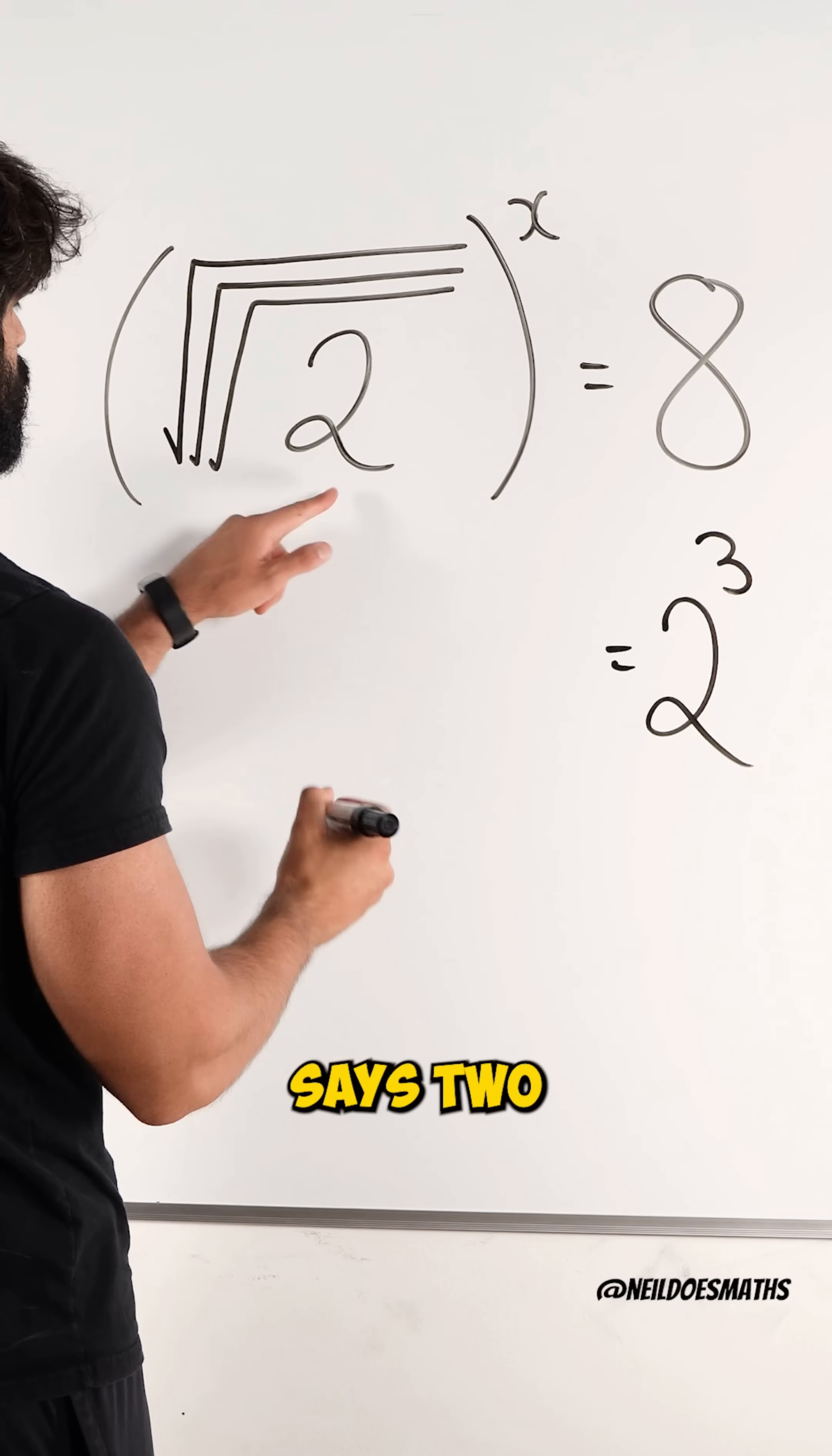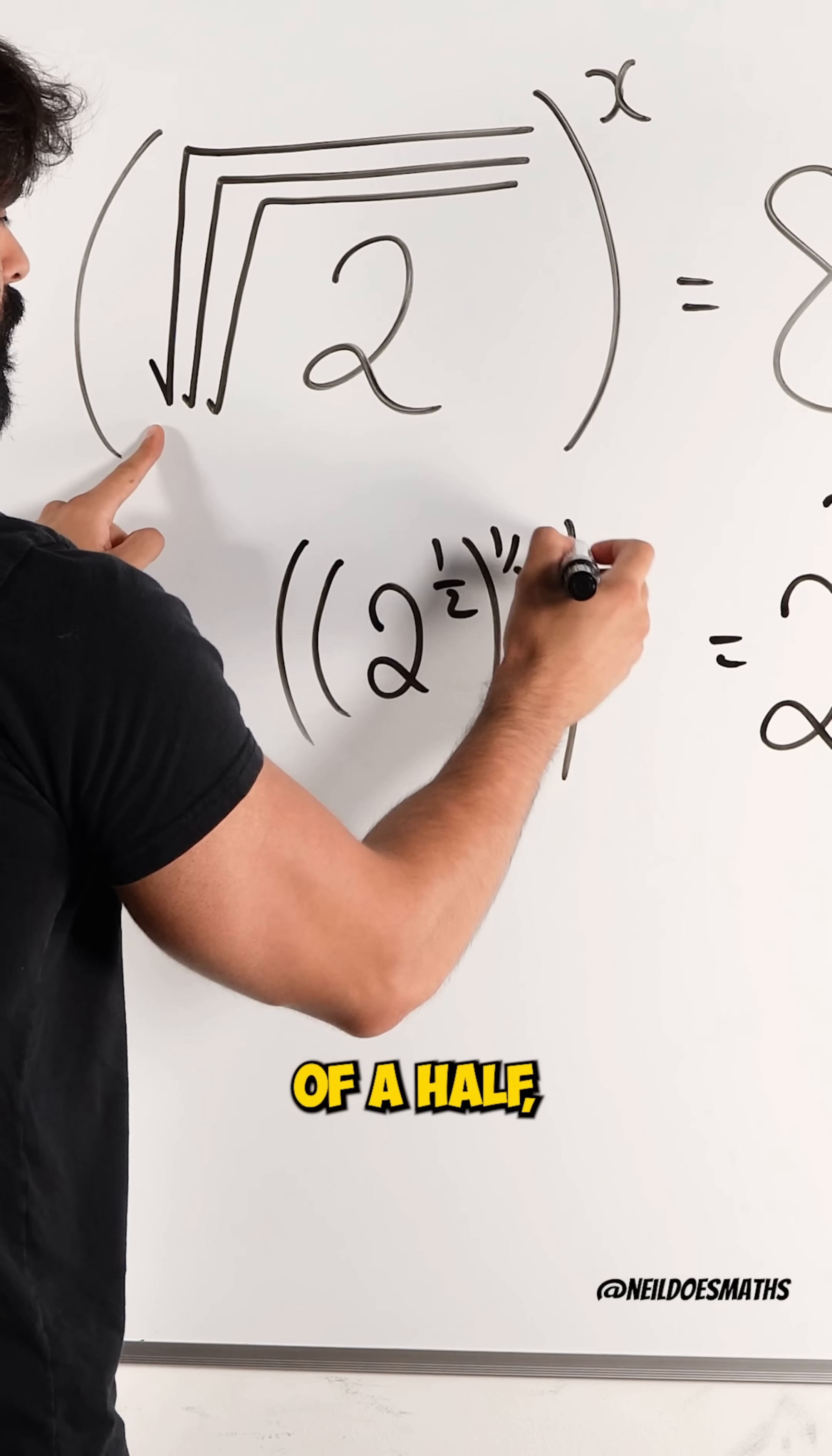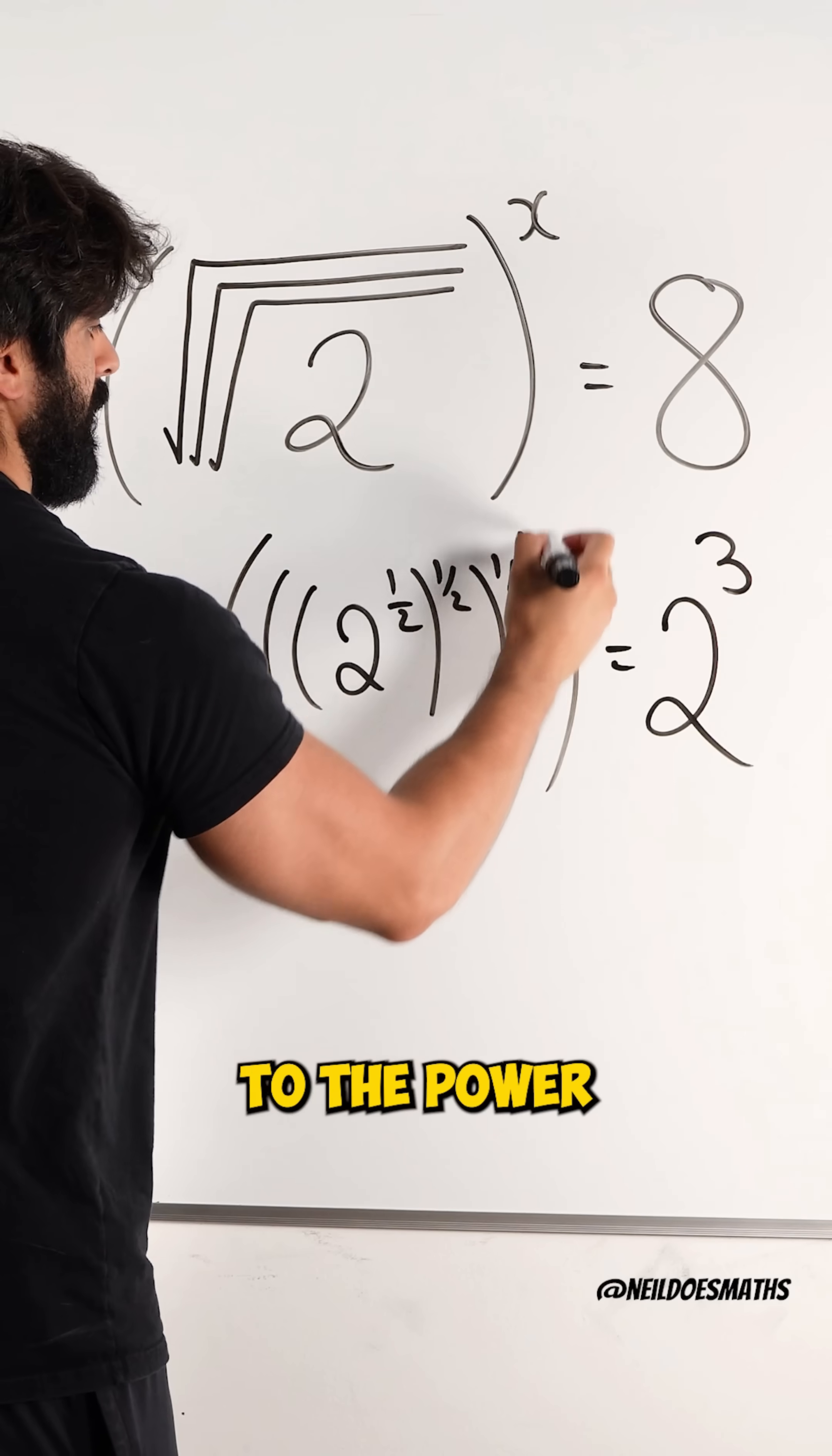So, this essentially says 2 raised to the power of a half, and then we're raising it to the power of a half, and then we're raising it all to the power of X.